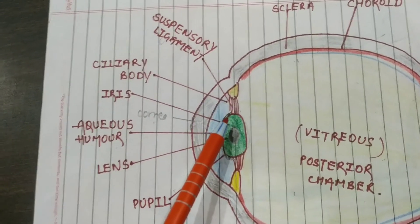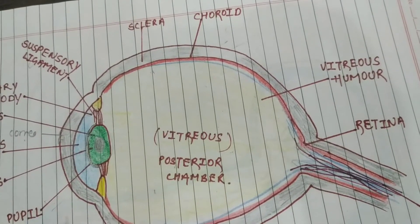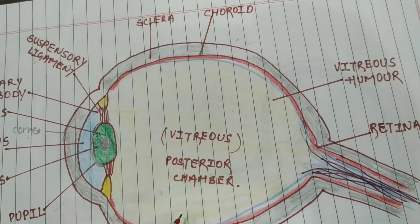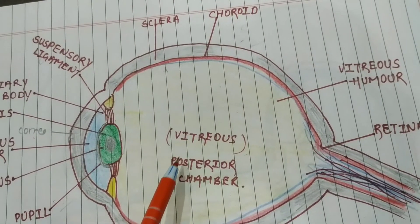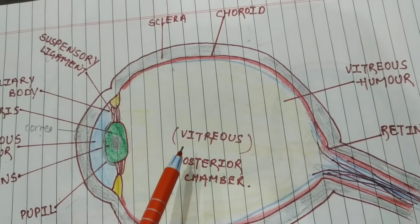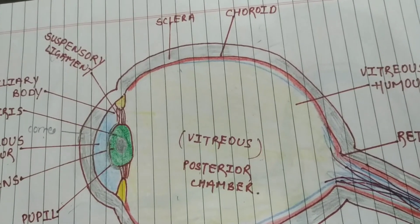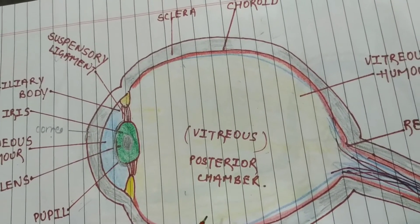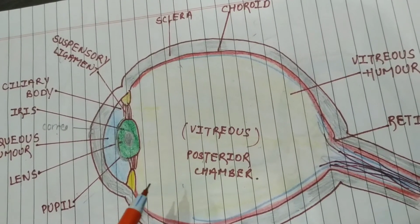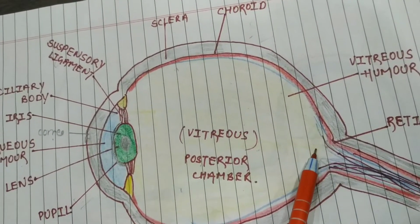Here is the posterior chamber of the eye. Here is the vitreous humor — vitreous humor is a jelly-like substance. This jelly-like substance provides a spherical shape to the eye. If the vitreous humor is not present, the shape of the eye would not be spherical, as the gel maintains the position of the eye.